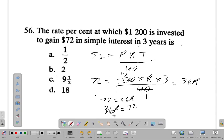If you divide by 36 on both sides, 36 cancels itself, leaving R equal to 72 over 36, which gives you 2. That's answer B. So the answer for question 56 is B.